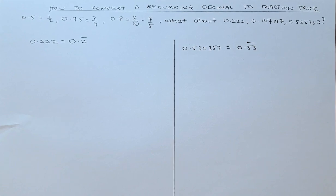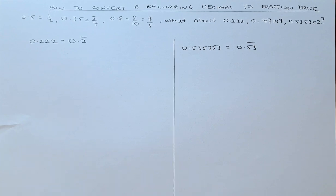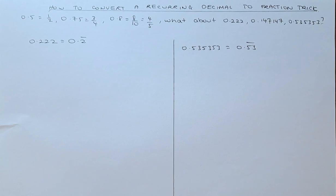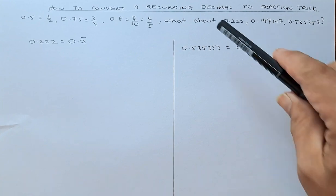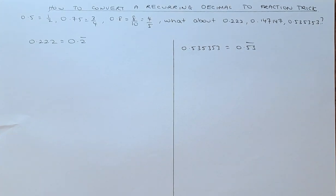We know that a normal decimal such as 0.5 can be easily converted to half, 0.75 can be converted to three-quarter and 0.8 can be converted to four-fifths. What about 0.222, 0.147147 and 0.535353? They are recurring decimals. How do we convert to a fraction?